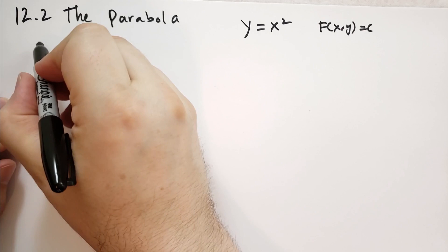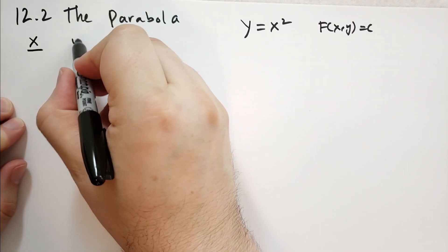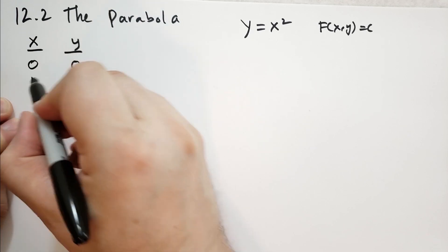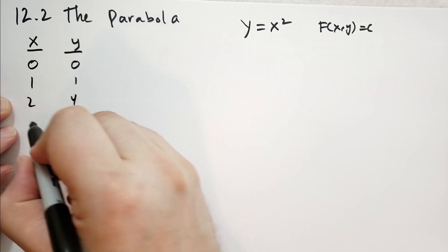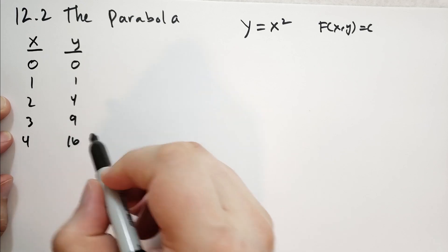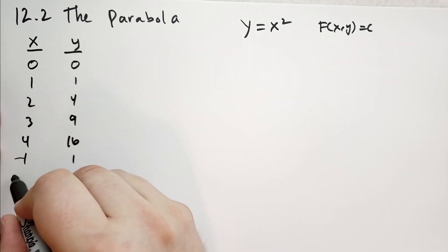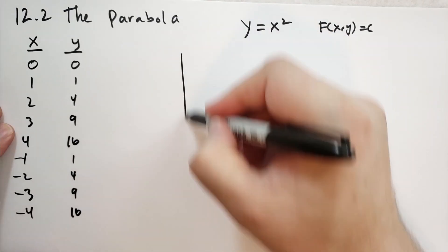So let's make a table. We're going to have x over here and y over here. When x is 0, y is 0. When x is 1, y is 1. When x is 2, y is 4. x is 3, y is 9. When x is 4, it's 16. And the inverse: minus 1 is 1, minus 2 is 4, minus 3 is 9, and minus 4 is 16.